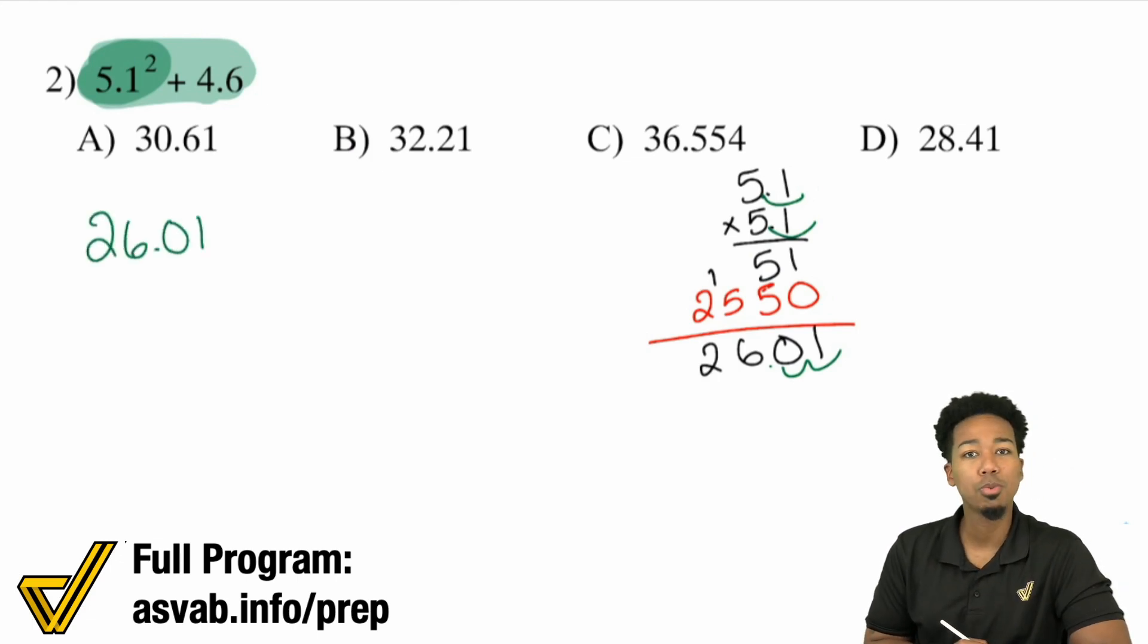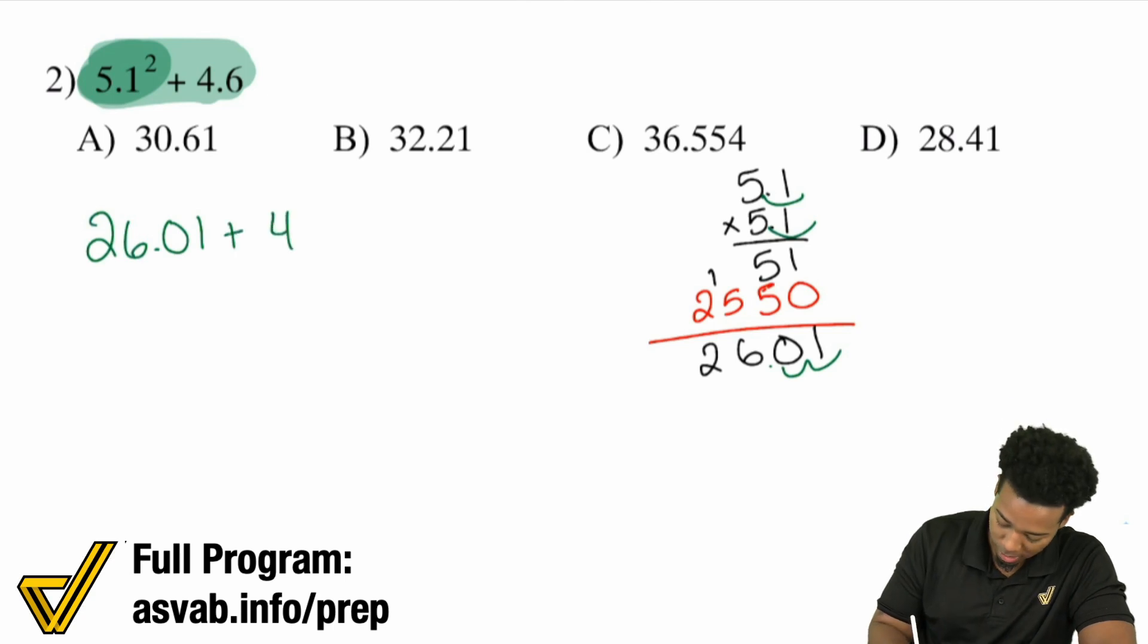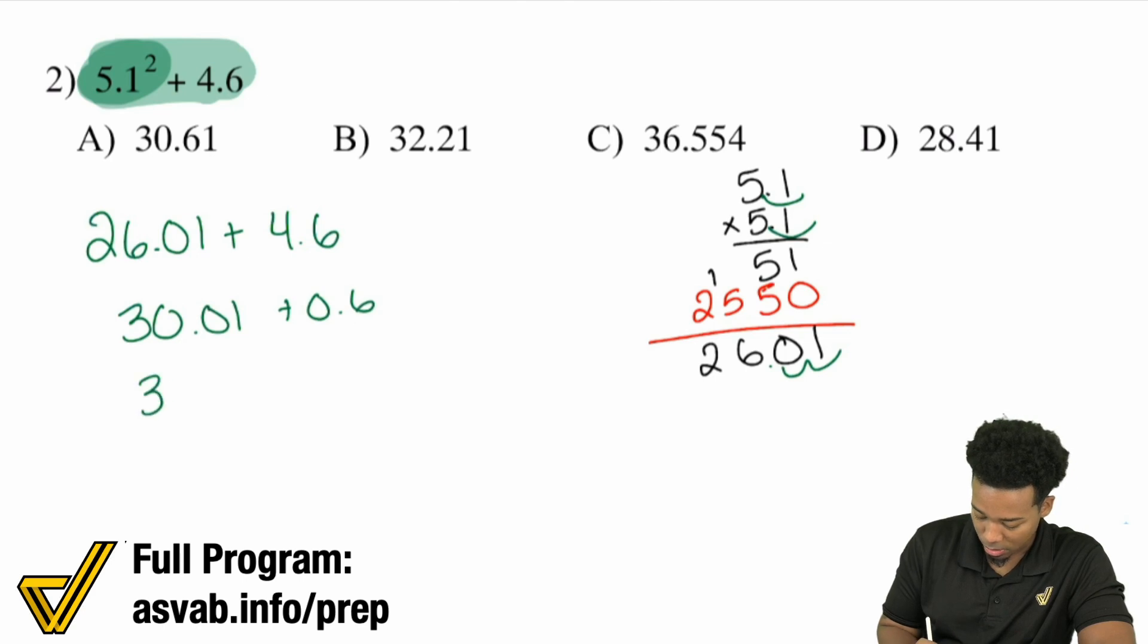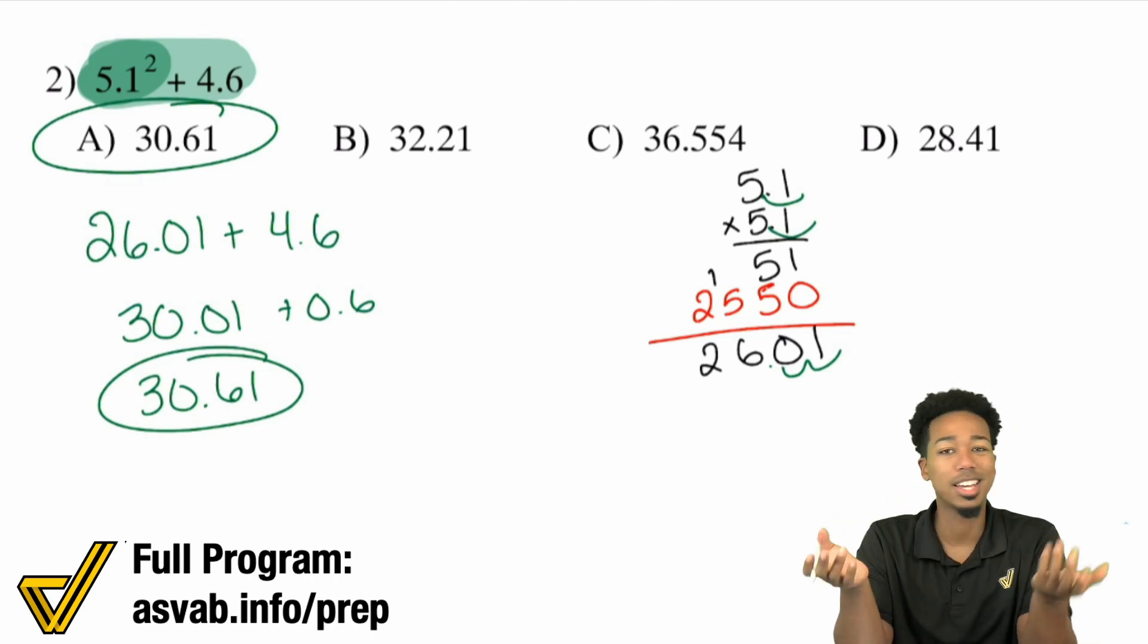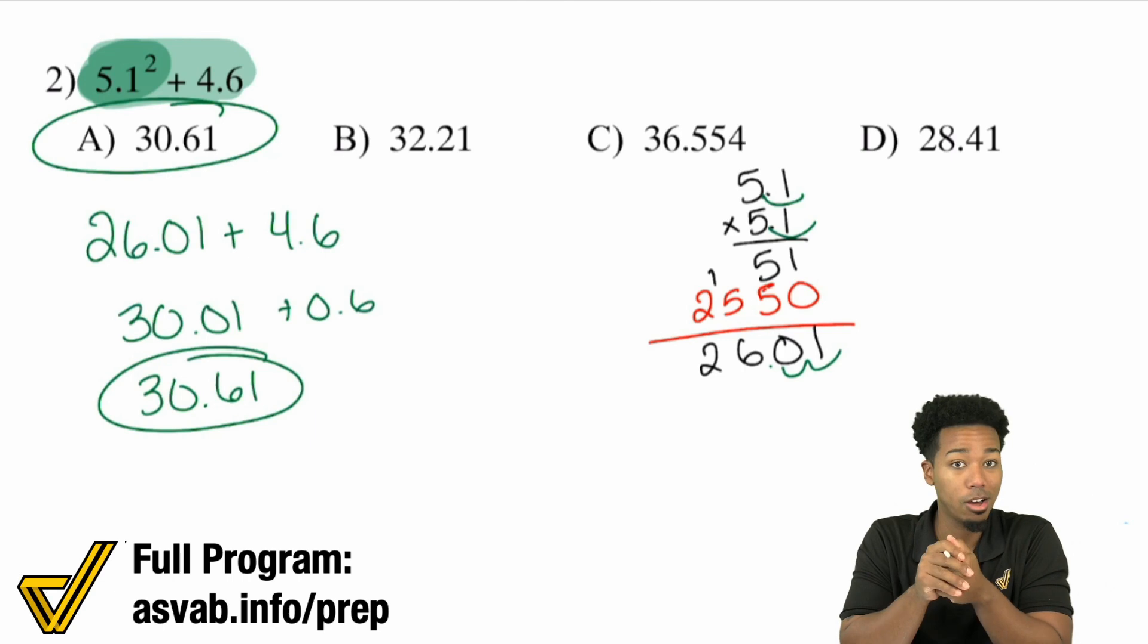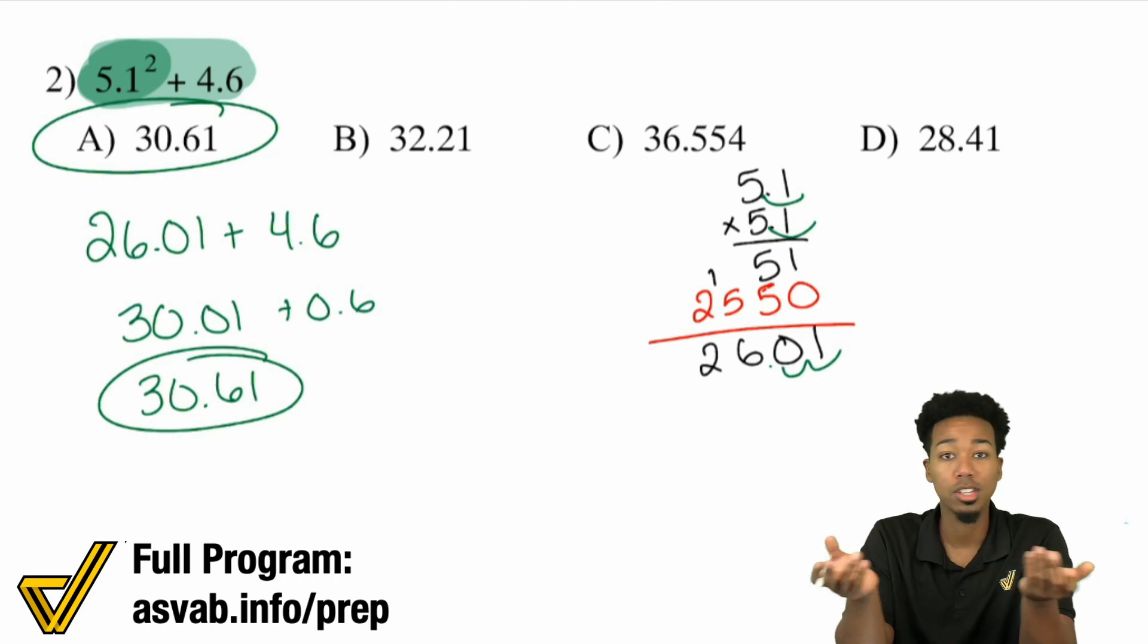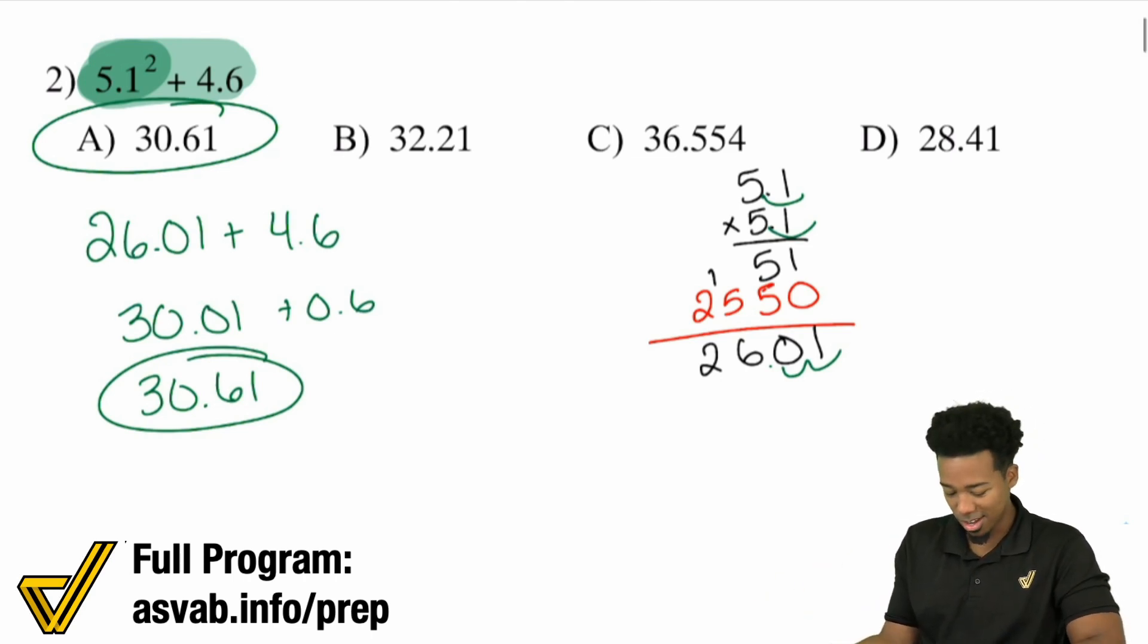Sweet. So we have 26.01 and we're adding 4.6. Sounds good. You can use a little bit of momentum up here. Add the four first. So that'll be 30.01 plus 0.6. Then add the 0.6. So it's 30.61. Done and done. So again, at the end of the day, this is literally the same as order of operations, just with decimals. So will it take you slightly longer? Maybe. Because you're dealing with more than one digit. So I get that. But at the end of the day, it's still the same process, the same procedure. We're just dealing with different numbers at the end of the day. So let's go through a couple more examples here. Let's go through about eight more and we'll be good.